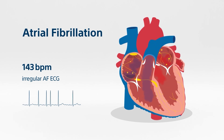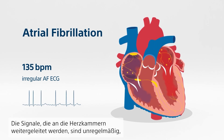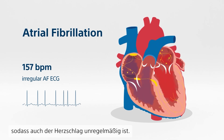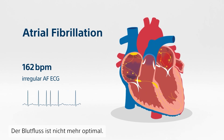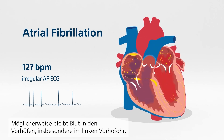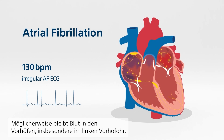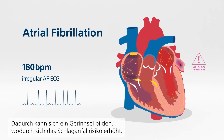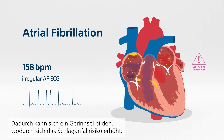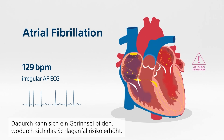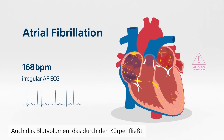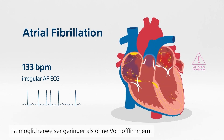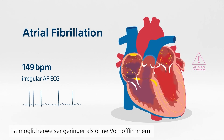During atrial fibrillation, the atrial rate can be very high, causing the atria to quiver or fibrillate. The signals passed on to the ventricles are irregular, resulting in an irregular heartbeat. Blood flow is no longer optimal — some blood may linger in the atria, particularly in the left atrial appendage (LAA), where a clot may form, increasing the risk of stroke. The volume of blood circulated throughout the body may also be reduced.